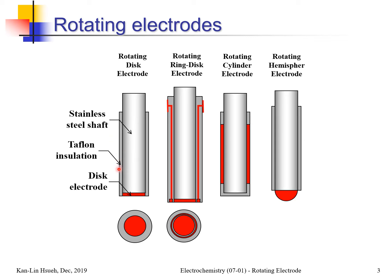The rotating electrode is made using a hollow Teflon tube. When heated up and soaked in water, the stainless steel shaft is hot-pressed into the Teflon tube. When cooled down, the Teflon shrinks and makes it watertight. This means the electrode cannot be operated at elevated temperatures because the Teflon softens and the seal leaks.